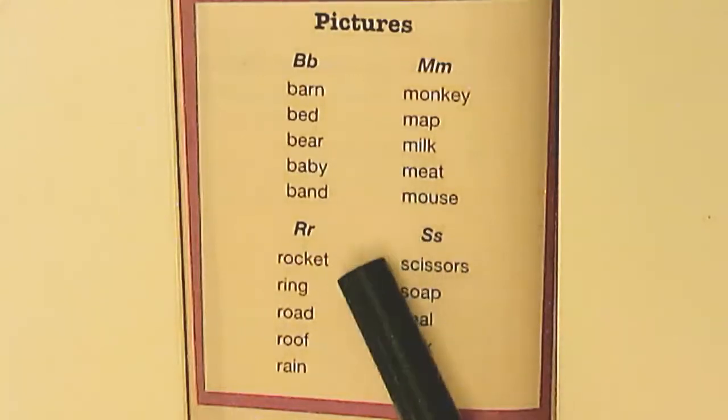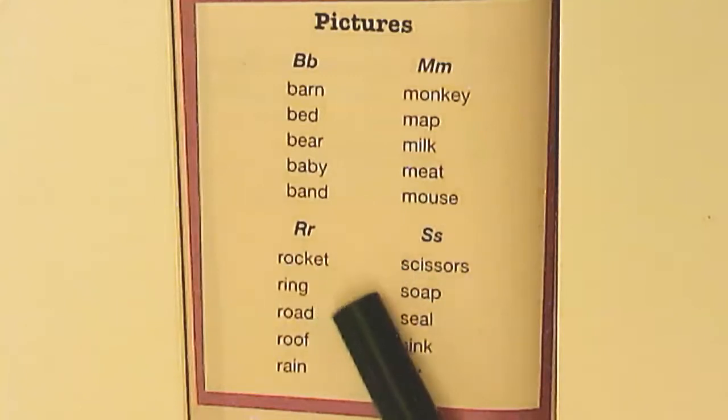For R, we have rocket, ring, road, roof, and rain.